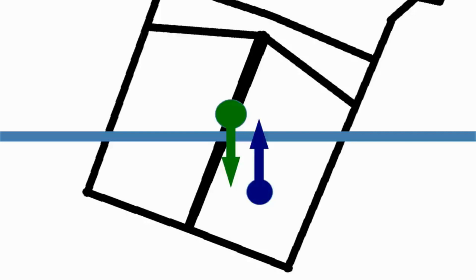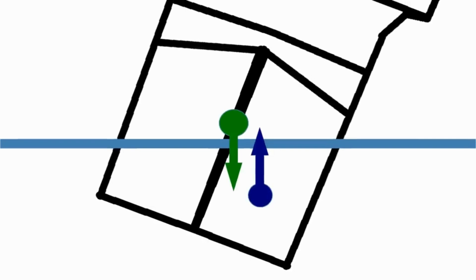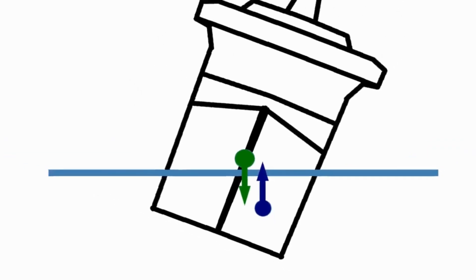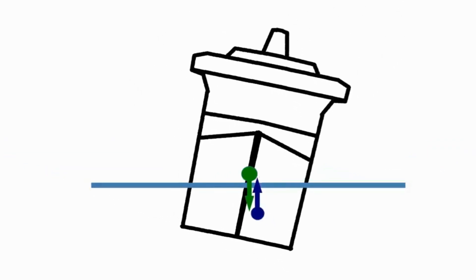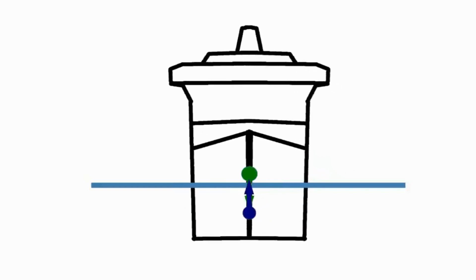Those arrows are slightly apart from each other, and they're going to create a twisting kind of force acting on the whole ship. As soon as the wind stops, that force is going to push the ship upright again.